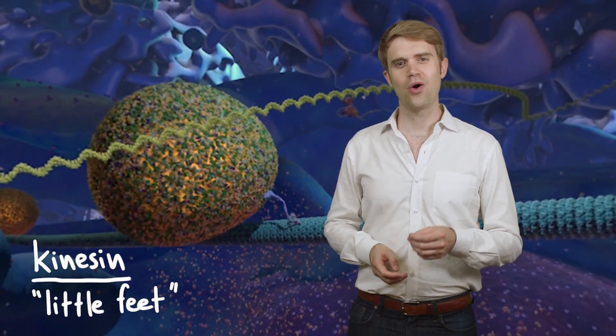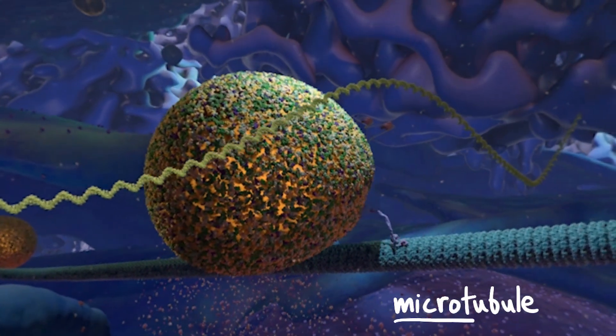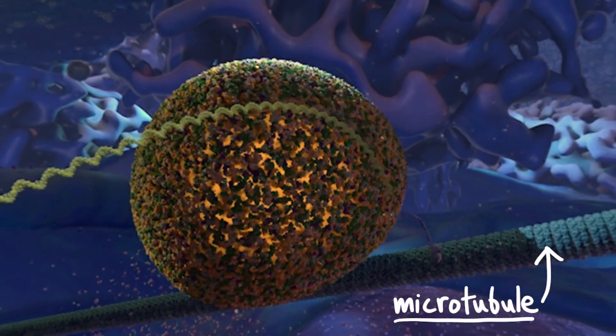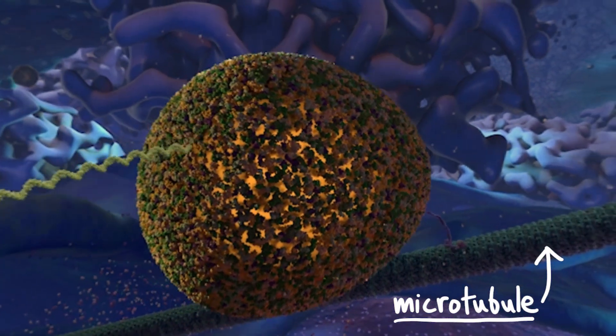And here is how the vesicles get transported and delivered around the cell. They get pulled along by something that looks like feet. These little feet are proteins called kinesin. The track that they're walking along is a structure called a microtubule. Microtubules are almost like train tracks. The vesicle will get walked along this microtubule until it gets where it needs to go.